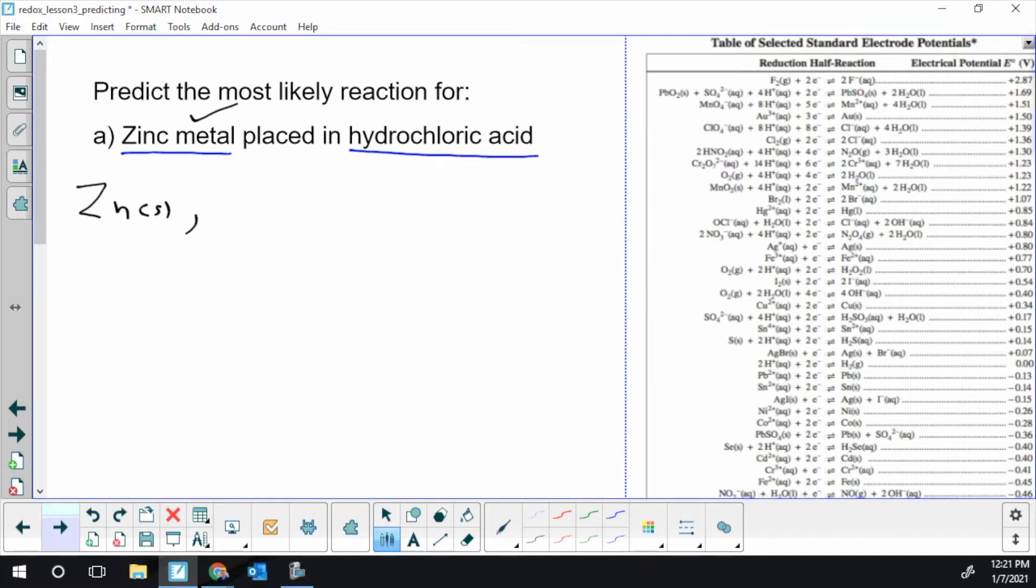We've got to figure out, is that a strong acid or a weak one? If it's weak, we're going to leave it together. If it's strong, we're going to break it up. Page eight has your acid base table, and hydrochloric acid is way at the top of your acid base table, where the strong ones are. So that is a strong acid. So we're going to break this up into its two pieces.